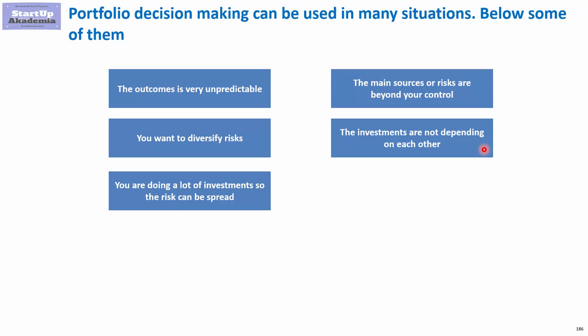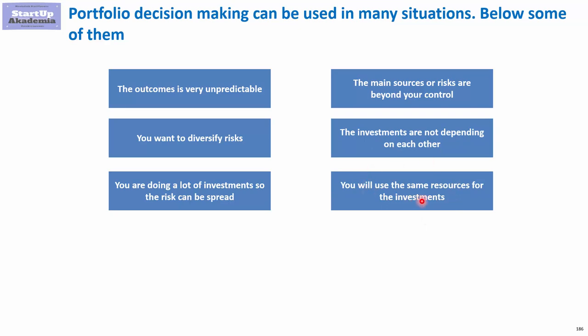Another important thing is that the investments are not dependent on each other. You may think you've diversified and mitigated risks, but due to interdependencies between projects a domino effect can occur — one failing project may impact others. Portfolio decision making assumes projects are not dependent on each other; if they are, consider them within the same risk group. The last condition is using the same resources for investments. In short: unpredictability, desire to diversify risk, many investments, risk beyond your control, and investments that are not interconnected.